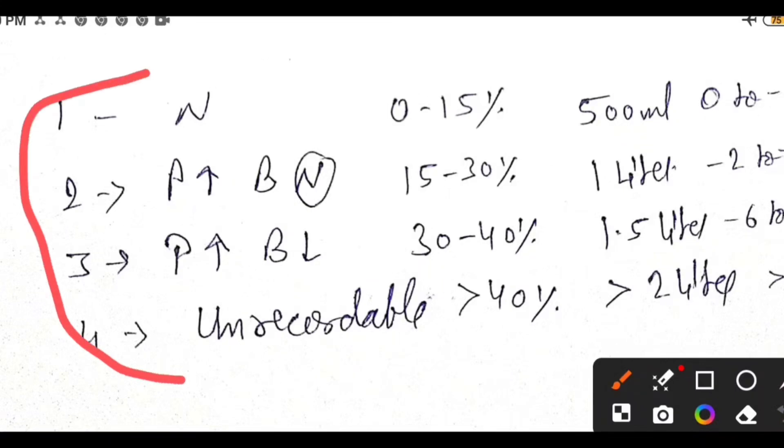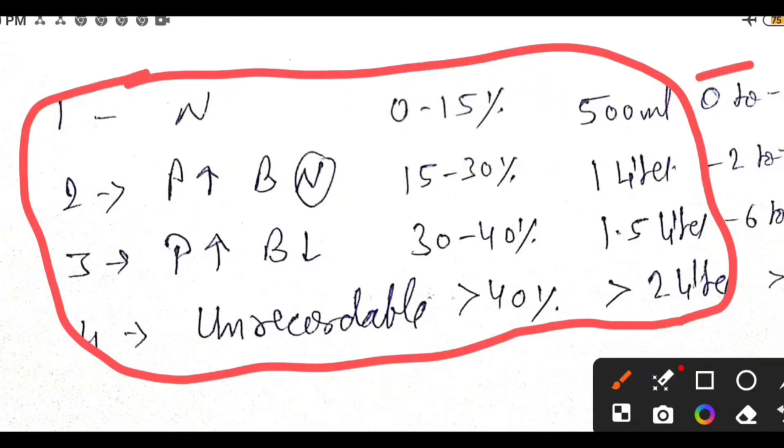Yesterday, number 1 MCQ, I discussed about everything, this one. So grade 1 shock is 0 to minus 2 mEq/L base deficit. Grade 2 is minus 2 to minus 6, and grade 3 is minus 6 to minus 10, and grade 4 is more than minus 10.